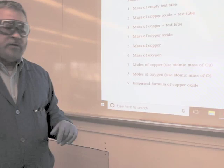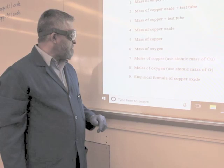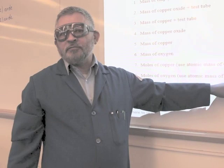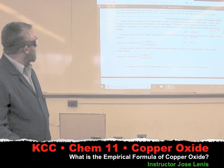Then you follow the instructions: find the moles of copper using the atomic mass of copper from the periodic table, then find the moles of oxygen using the atomic mass of oxygen from the periodic table, and you can find the empirical formula of the copper oxide. Your handout explains how to calculate the empirical formula using the data you have. Stay tuned for the next experiment.